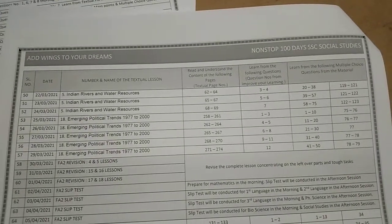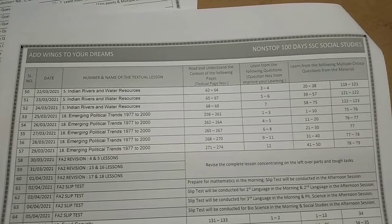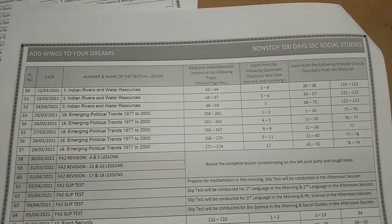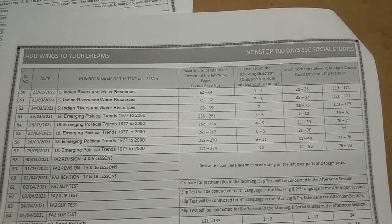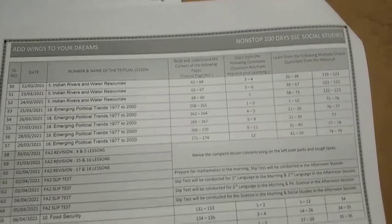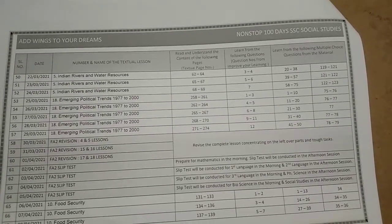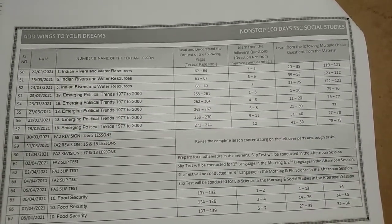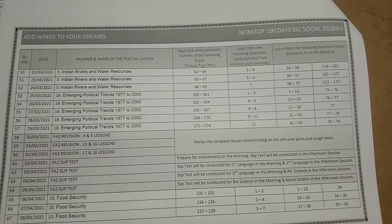After that, we have lesson number 18, 'Emerging Political Trends, 1977 to 2000'. Then we have FA-2 Revision for 3 days, followed by 4 days for the FA-2 Slip Test.